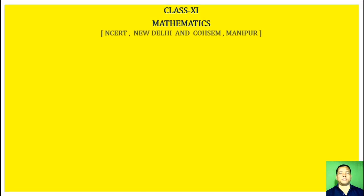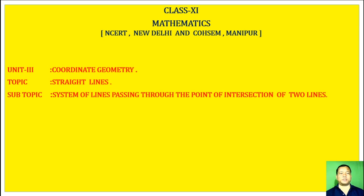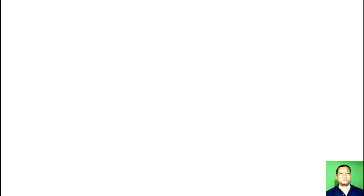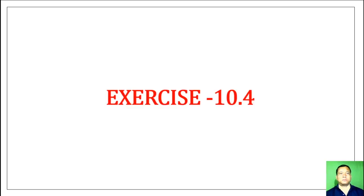Class 11 Mathematics, NCERT New Delhi and Qosem Manipur. Unit: Coordinate Geometry. Topic: Straight Lines. Subtopic: System of Lines Passing Through the Point of Intersection of Two Lines. Exercise 10.4.